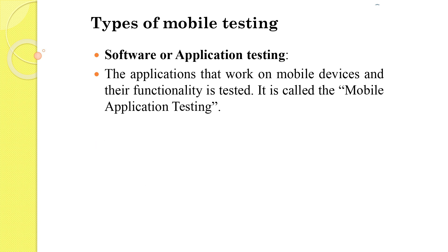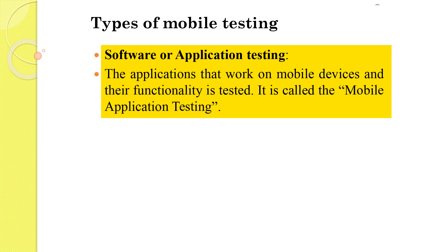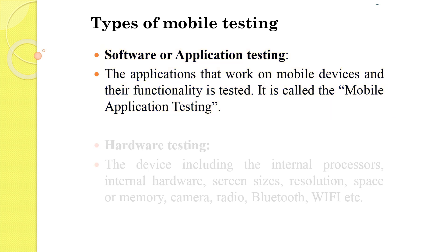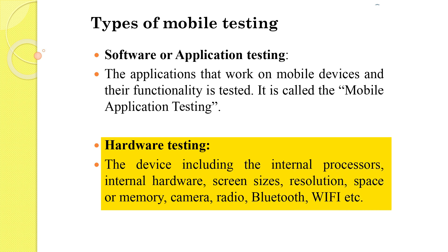Software application testing covers the applications which actually run on mobile devices — that is the mobile app. Hardware testing covers the device used for testing. We have to check processors, internal processors, screen sizes, resolution, memory, Bluetooth, Wi-Fi, camera, radio — everything. Because in various apps we use different internal features of mobile as well.